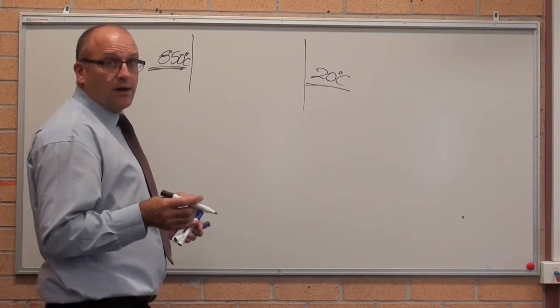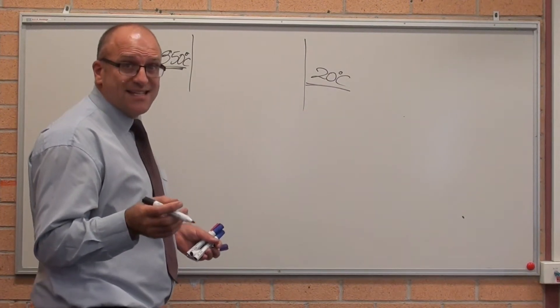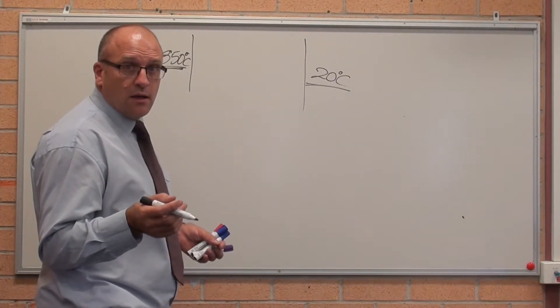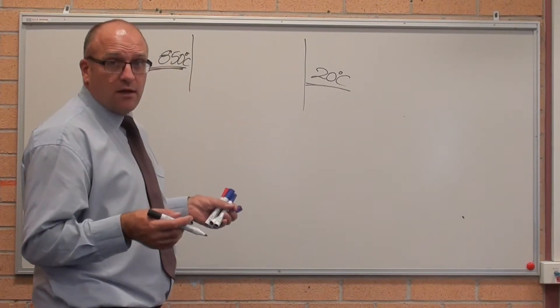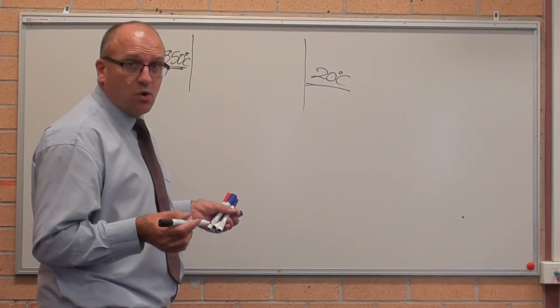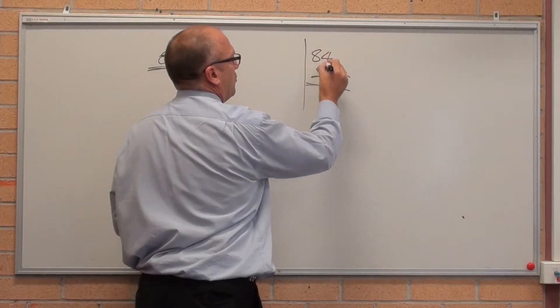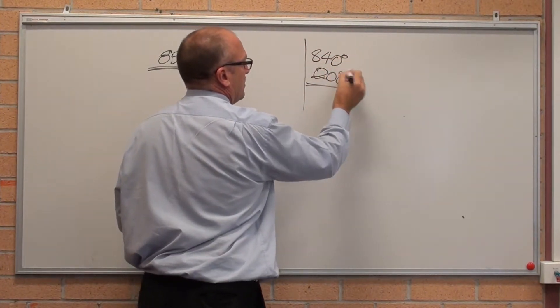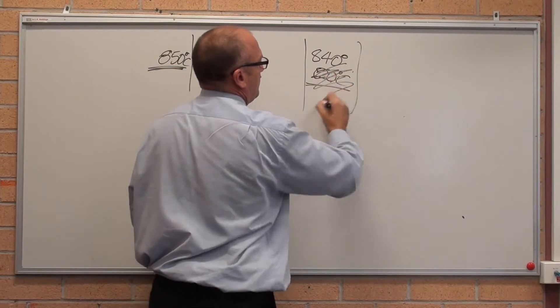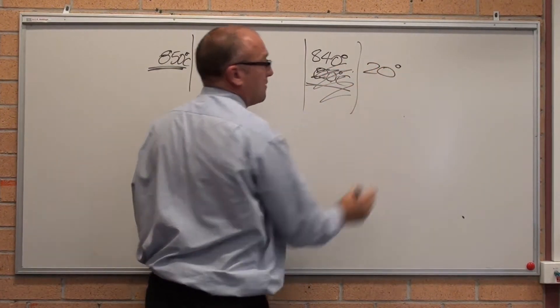The slowest cooling rate is annealing. Heated up to 850 degrees, turn off the furnace, walk away. The furnace walls are 840 degrees. They've got insulation in them. Out here, there's 20 degrees centigrade.